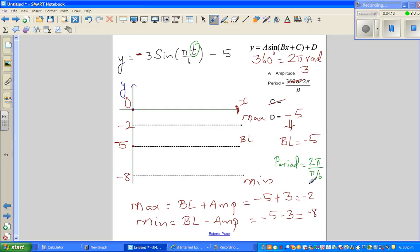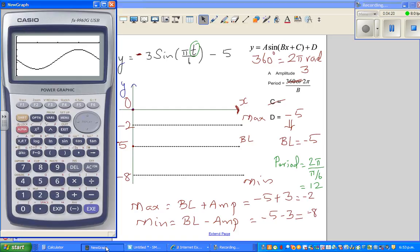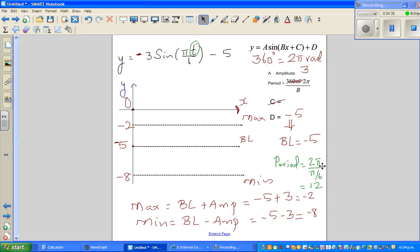This is same as, I'll show this on a calculator, 2 pi divided by pi by 6 is 12. You don't need a calculator though. 2 pi divided by pi by 6 is same as 12 pi divided by pi, which is 12. So you have a period of 12.